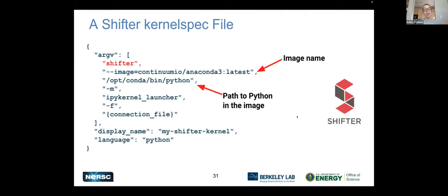Another thing you can do: maybe your workload is container-based. You can use a Shifter-based kernel spec file — and we should probably think about how to do this with Podman eventually too. You take the image name you're interested in, point the kernel spec to the Python in the image with the rest of your scaffolding, and then your notebook runs in the container and image that you're interested in using.